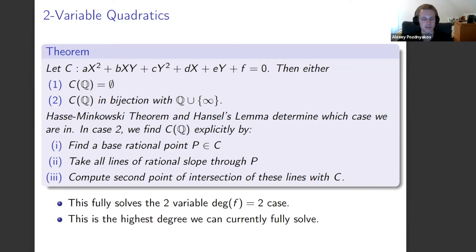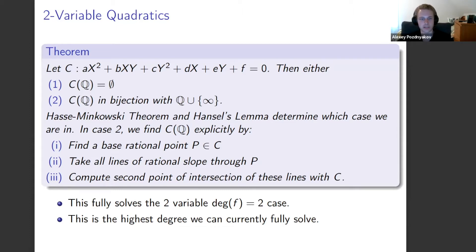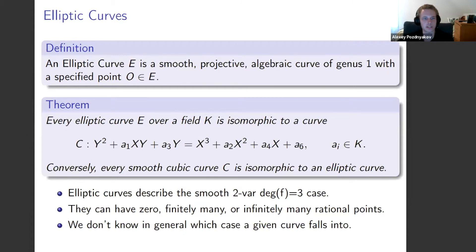Embarrassingly, degree two is the highest case we can completely solve — after thousands of years of study, that's as far as we've gotten. Once you go to higher degrees, the Hasse-Minkowski theorem fails. A famous counterexample: the cubic equation 3x³ + 4y³ + 5z³ = 0 has only the trivial rational solution, yet has non-trivial solutions in every single completion of the rationals. Because Hasse-Minkowski breaks down, we can't completely solve these more difficult equations — and that's where elliptic curves come in.